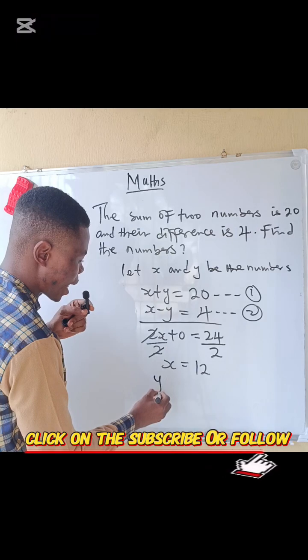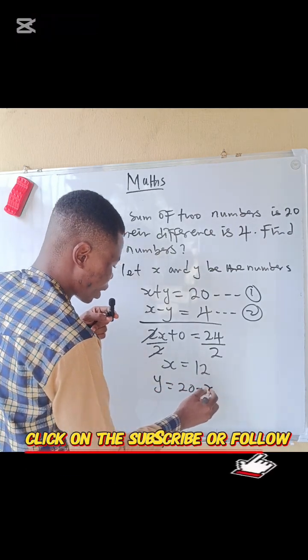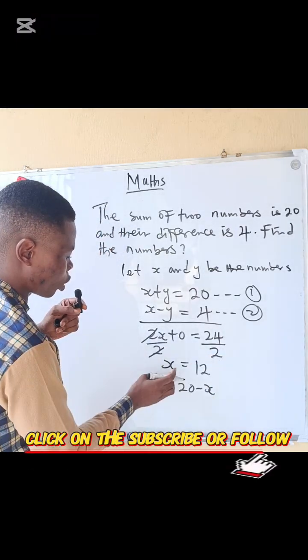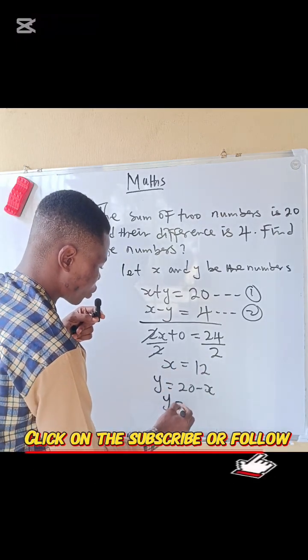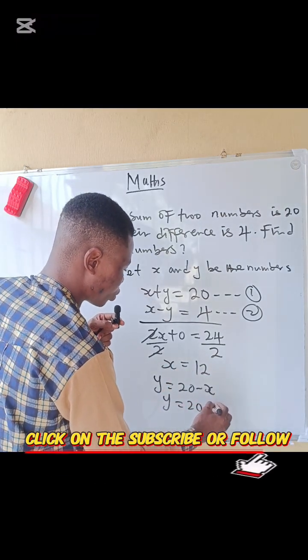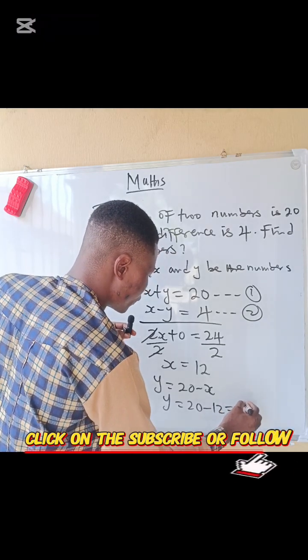Now replace x because we know the value of x to be 12. So y equals 20 minus 12, which is going to give you 8. Therefore, x equals 12 and y equals 8.